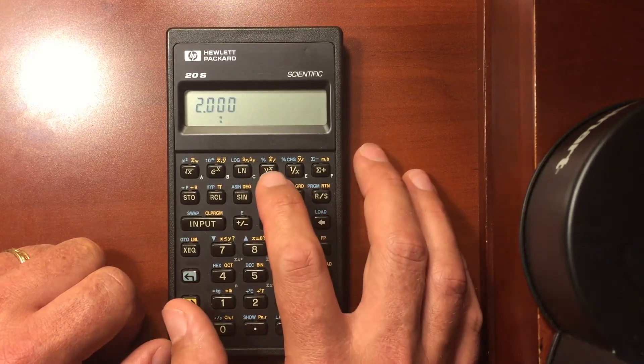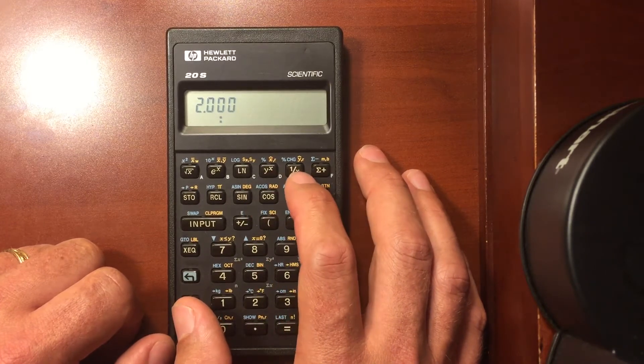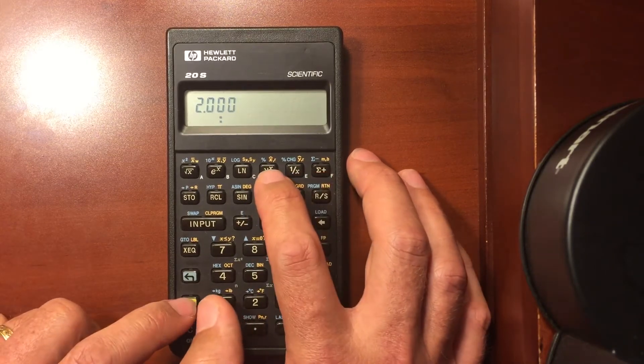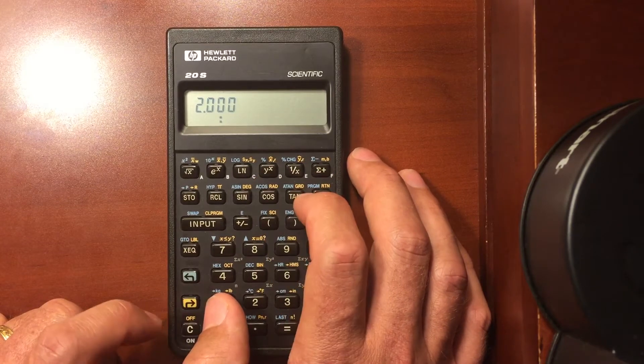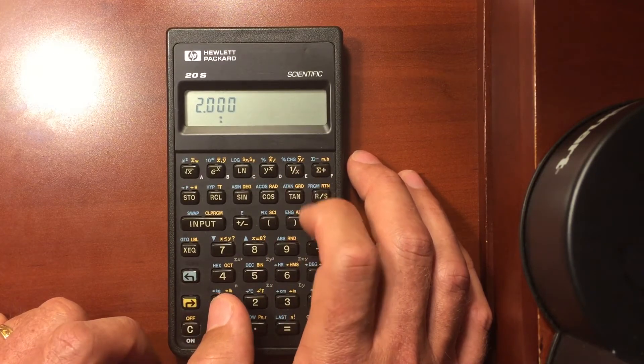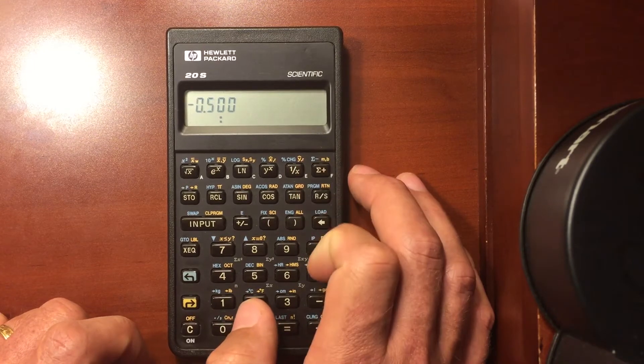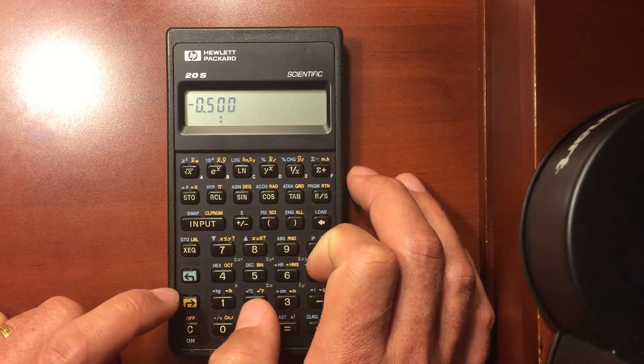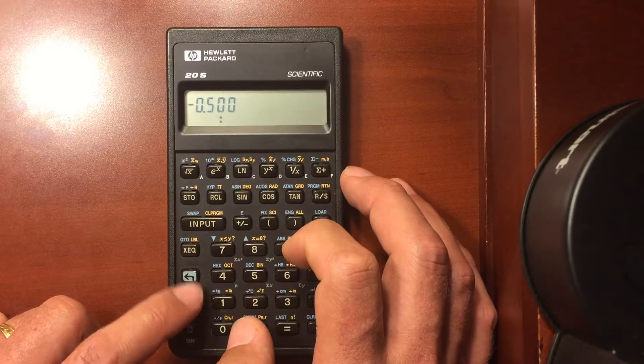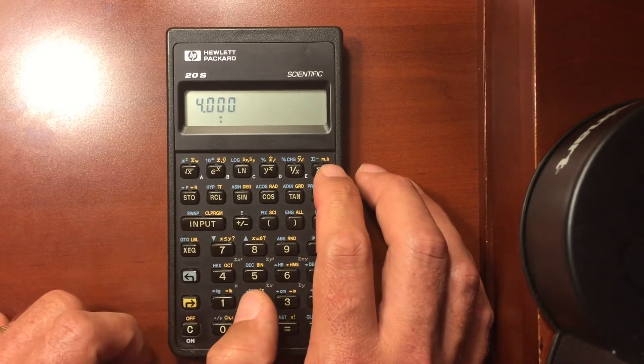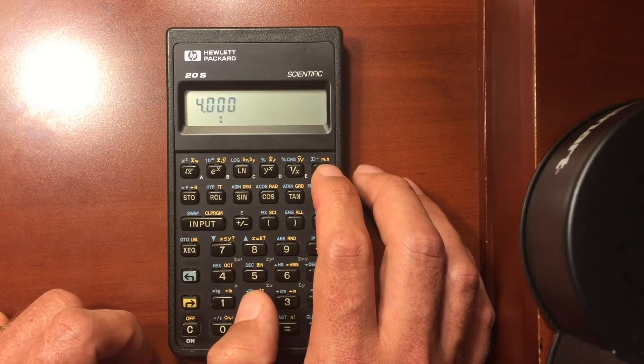And I can look at my linear regression. I can see my x value, my y value. I can look at my slope if I'm doing this as a linear regression. Again, swap. And now I can swap and see the y-intercept.